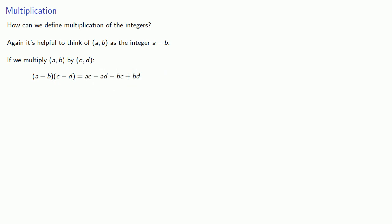If we want to read this back as an ordered pair, we need to express it as something minus something, which gives us our component.